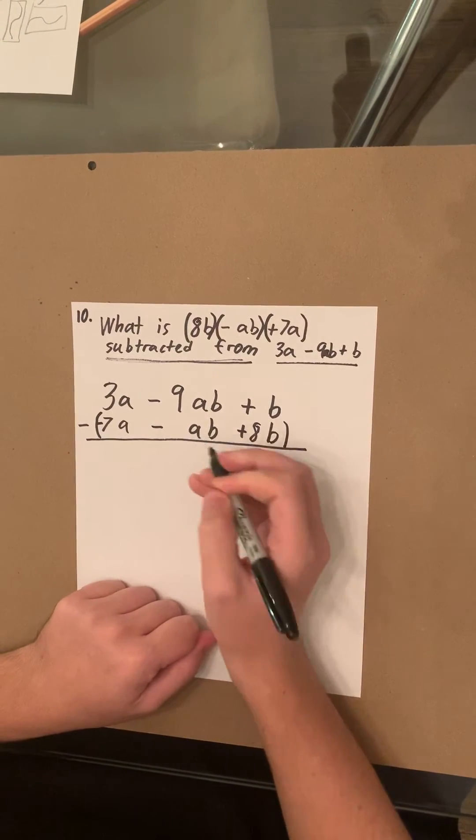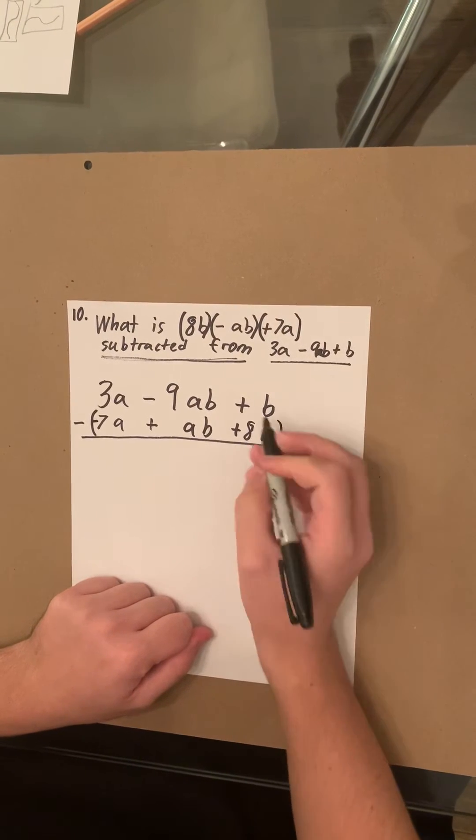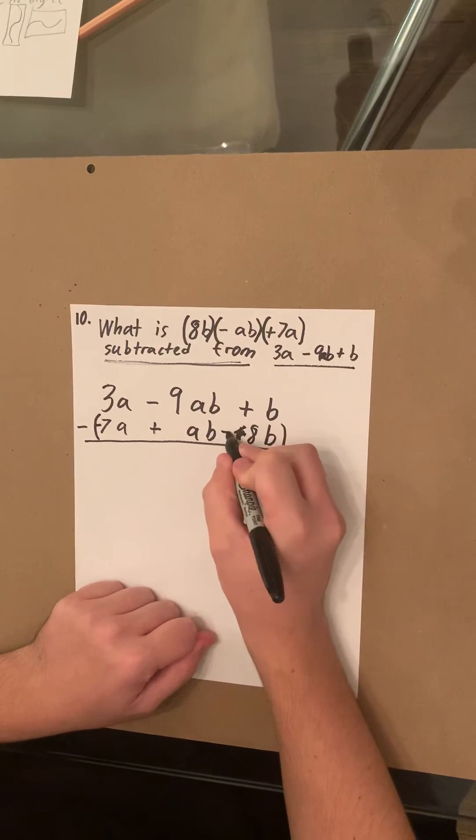This negative AB becomes a positive AB, and this positive 8B becomes a negative 8B.